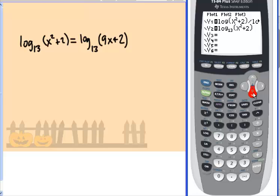Same thing for the right-hand side of this equation. If you have an 83, you would do log 9x plus 2, close parentheses, divided by log 13.